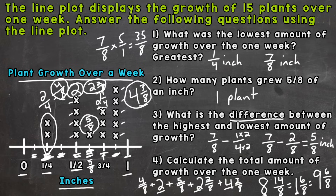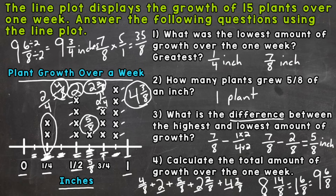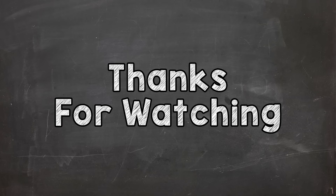I'm running out of room, so I'll rewrite the answer at the top left: nine and six eighths, and six eighths can be simplified — divide both by two — giving nine and three fourths of an inch. So nine and three fourths of an inch is the total amount of growth between those 15 plants. Number four is a common type of problem that comes along with line plots, and it does take quite a bit of work to solve. Hopefully that helped with interpreting and reading line plots that involve fourths, eighths, and halves. Thanks so much for watching!